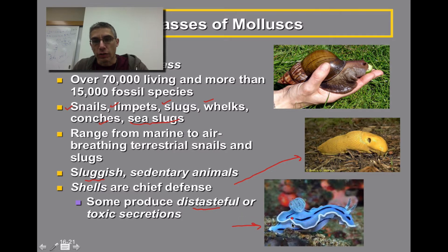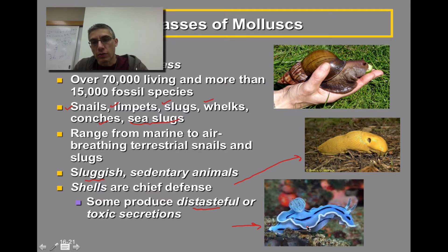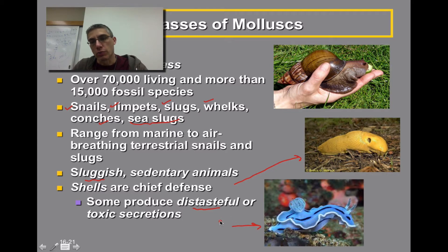If you look over here on the right, you can see how colorful these sea slugs can be. That's also considered another type of defense for these animals. If you have anything that's really brightly colored, a lot of predators will tend to stay away from those types of animals.